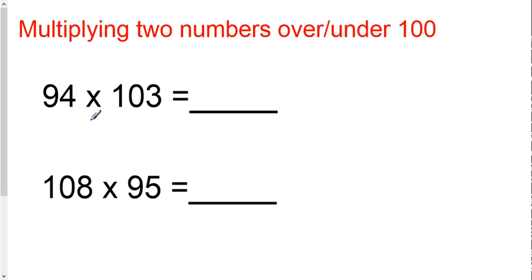Okay, I'll be teaching you the multiplying two numbers trick: one over 100, one under 100. This trick is a little bit harder than the other tricks that I've taught you so far, so really pay attention here.